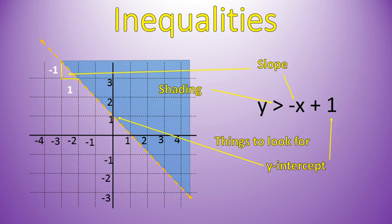The shading is that triangle you see above the line. If it has a greater than symbol, you shade above the line. If it has a less than symbol, you shade below the line. And that's the three basic things to look for.